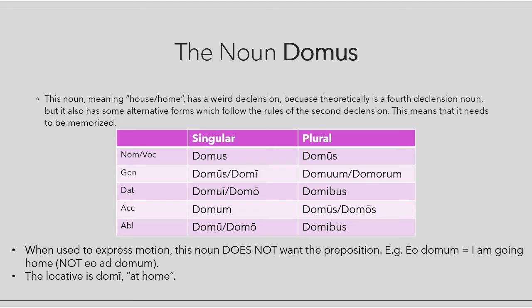You need to memorize these forms because you find both. When 'domus' is used to express motion, the noun does not take any preposition. For example, 'eo domum' means 'I am going home', but saying 'eo ad domum' would be a mistake in Latin. There is also a locative form, 'domi', which means 'at home' — it is a crystallized form that always means at home.